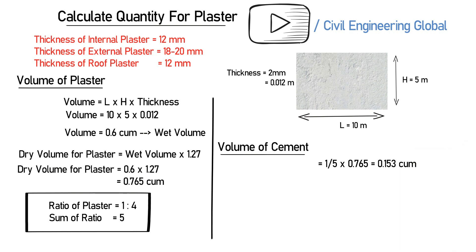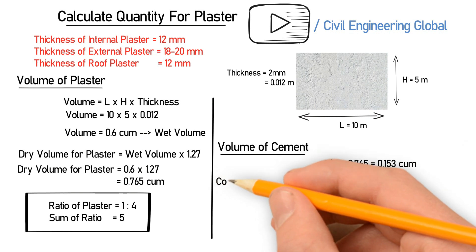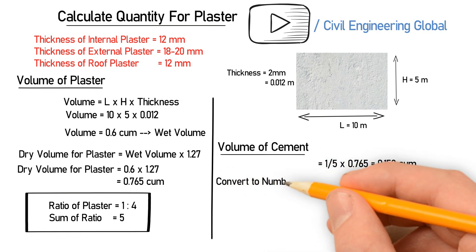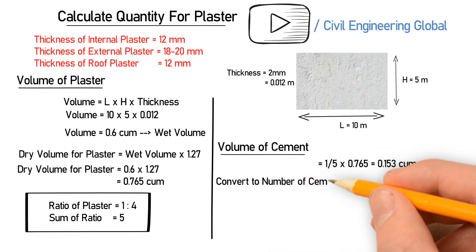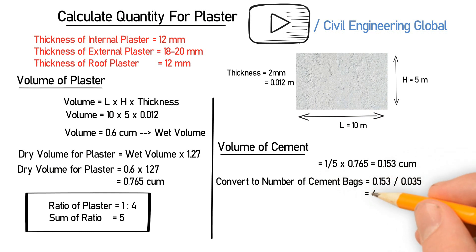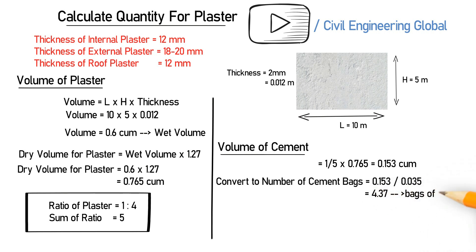This is the volume of cement in cubic meters. Let's convert this into number of bags. Using the formula: volume of cement divided by the volume of one bag, this gives 4.37 bags of cement. So 4.37 bags will be required for the plaster of this wall.